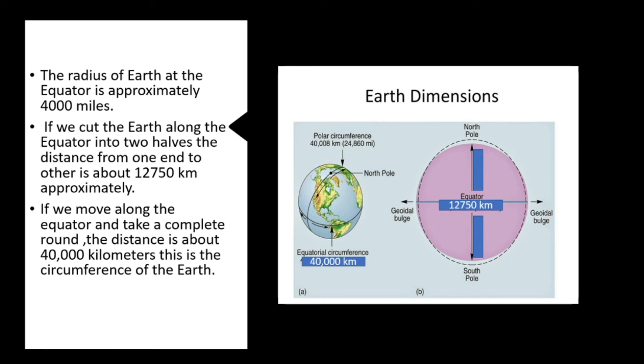If we move along the equator and take a complete round, the distance is about 40,000 kilometers. So this is the circumference of the Earth.